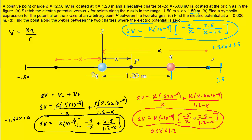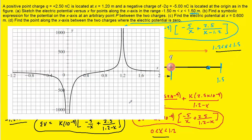You can grab a graphing calculator, type in each of these three functions, and examine what the graphs look like — adjusting the viewing windows as needed. If we graph these three functions for their respective restricted domains, we obtain a combined graph. The first curve in black corresponds to the first function, the curve in red corresponds to the second function, and the curve in blue corresponds to the third.